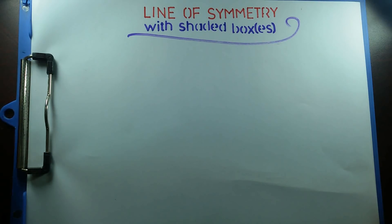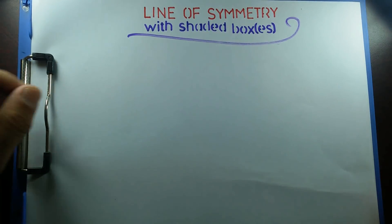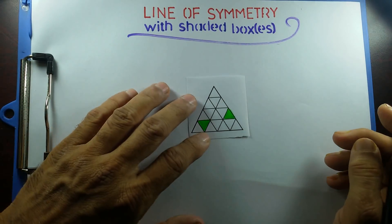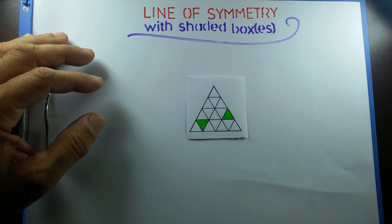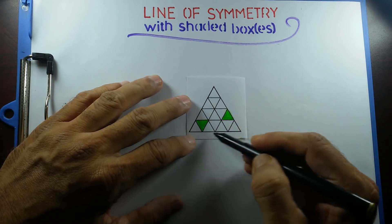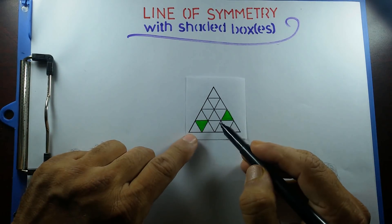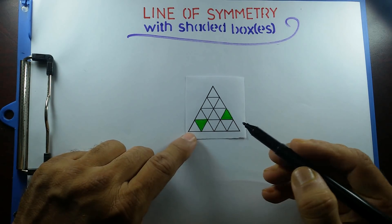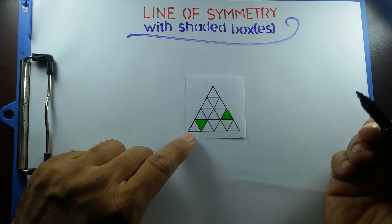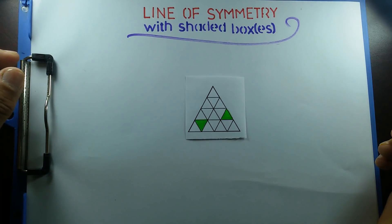Good morning students. On today's lecture I'll cover line of symmetry with shaded boxes. Sometimes in your O level question paper, they are going to ask you a question: if you have an equilateral triangle with lots of small equilateral triangles inside, and some of the triangles are shaded, they might ask you to shade one or more boxes to have some line of symmetry. How to do that?